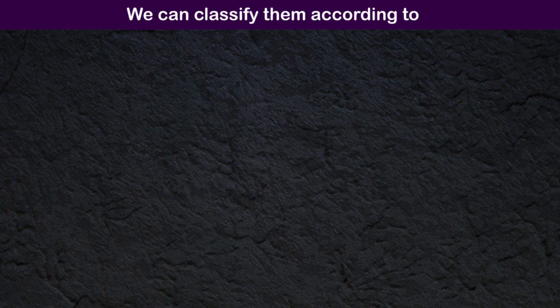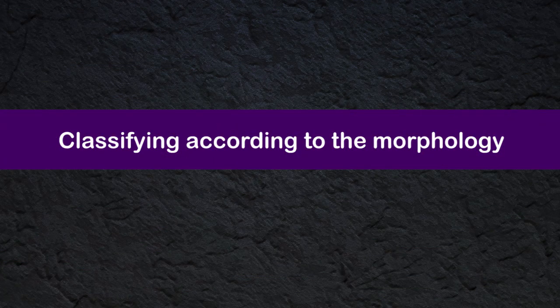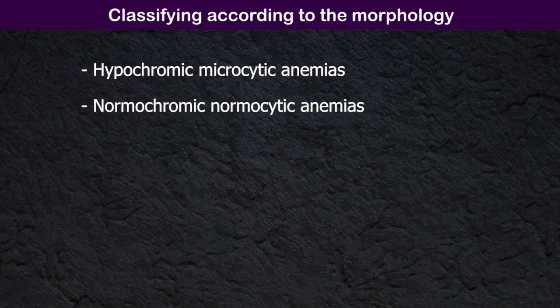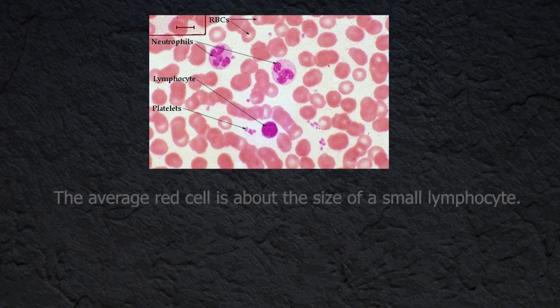We can classify anemia according to red cell microscopic appearance or by the causative mechanisms. Classified according to morphology — according to microscopic appearance of red blood cells — we can divide anemia into four categories: hypochromic microcytic anemias, normochromic normocytic anemias, macrocytic anemias, and anemias with abnormal red cell morphologies.